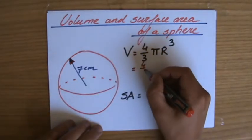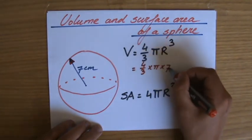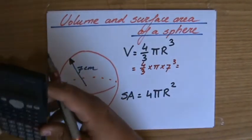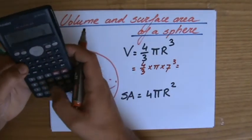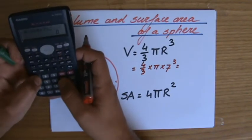So really all you have to do is 4 over 3 times pi times 7 to the power of 3 for the volume. 4 over 3 times pi times 7 to the power of 3.